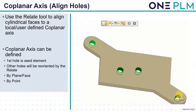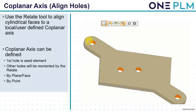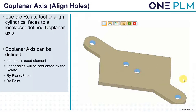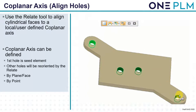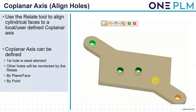The coplanar axis or align holes command aligns cylindrical faces to a local or user-defined coplanar axis. To run this: select the first hole as the seed element, then select the other holes to be orientated by this command, then select either a plane, a face, or as shown in the example, a point. Once we select the point all of the holes are lined up between those two points.